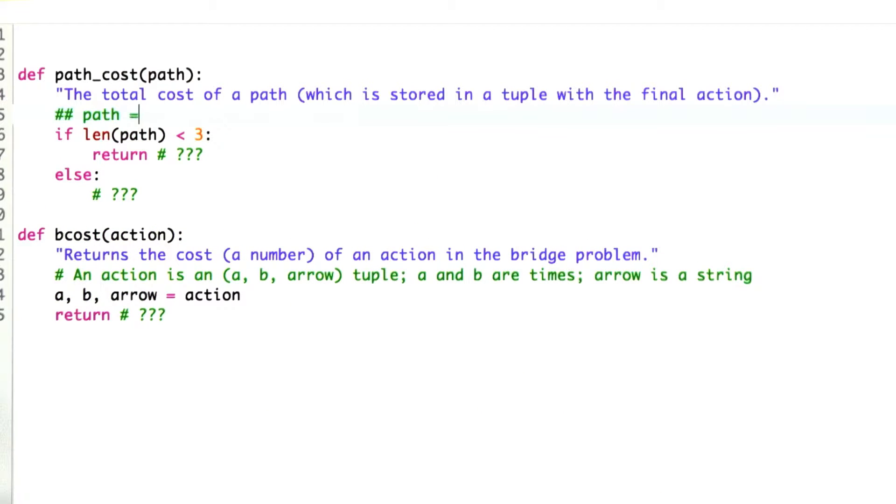That is, we said that a path is equal to a state followed by an action and a total cost, followed by another state, et cetera. And here I've just said, well, if we don't have any actions there, if it's the empty path, then do one thing, otherwise do something else.